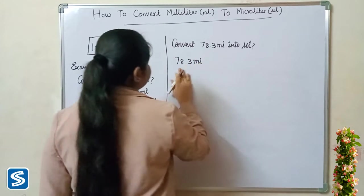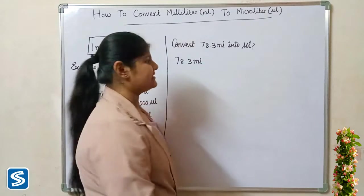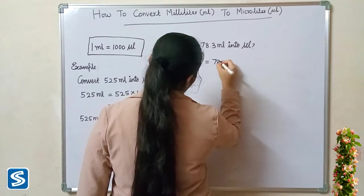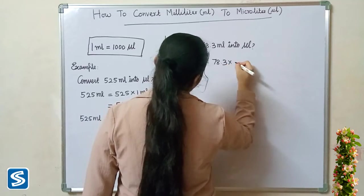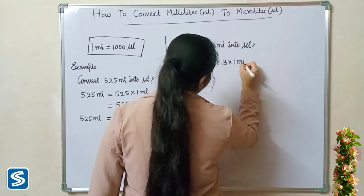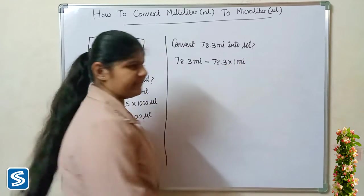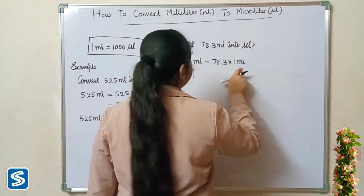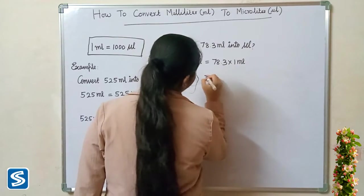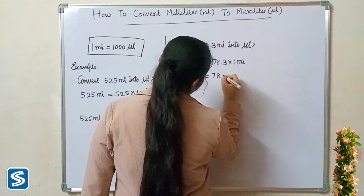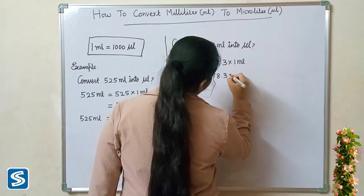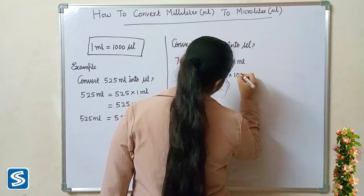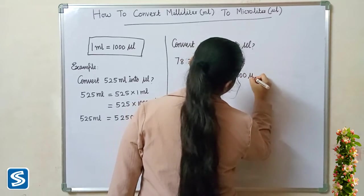Seventy eight point three milliliters — this can be written as seventy eight point three multiply one milliliter. Now we substitute one thousand microliters in the place of one milliliter, so seventy eight point three multiply one thousand microliters.